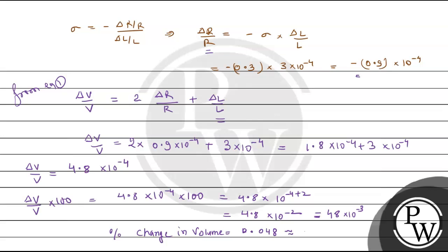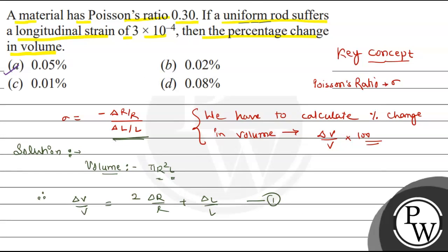You can write this approximately as 0.05. This is the right option. I hope you understood it well. Best of luck. Thank you.